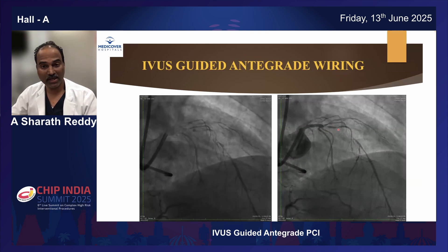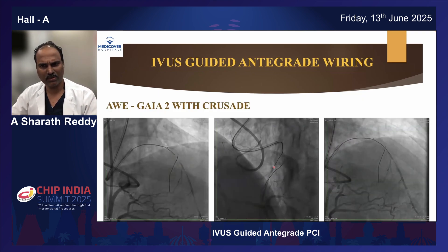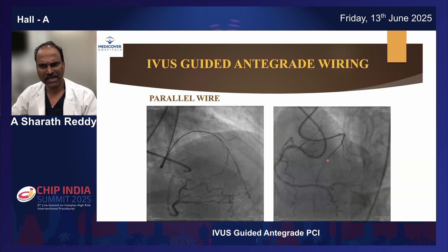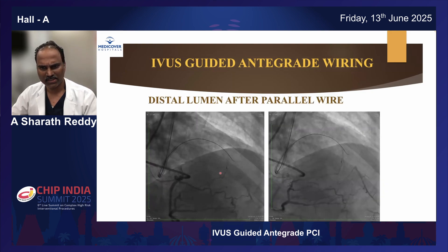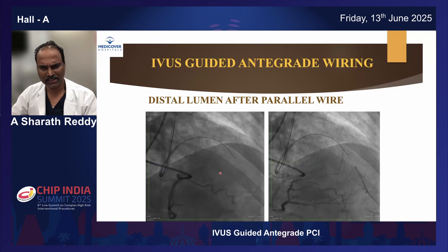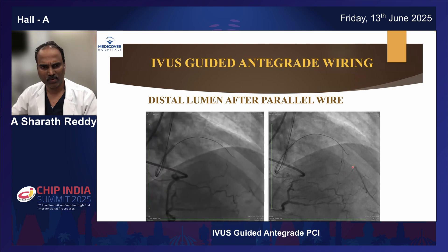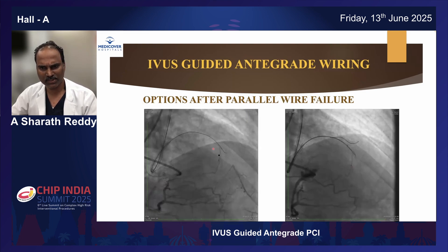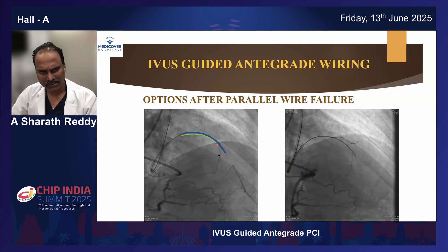We can also use IUS-guided antegrade wiring, especially when your wire is subintimal. In this case with an ambiguous cap, we did an IUS-guided cap puncture, but subsequently the wire ended up in subintima. We tried parallel wire, but it was not successful, and you can also see the lumen got collapsed. That's what happens when you try redirecting wire or parallel wire for a longer time - your subintimal space expands and the lumen collapses. That's when you can use IUS to locate your true lumen and wire it. You can take IUS on this wire, then locate and take parallelly a micro catheter and wire it, tracking your true lumen - or otherwise you can also do tip detection ADR. Either of these two can be done, otherwise the other option is going retrograde.